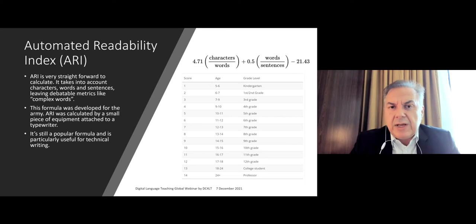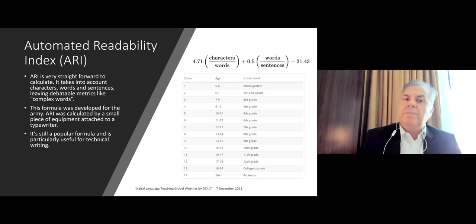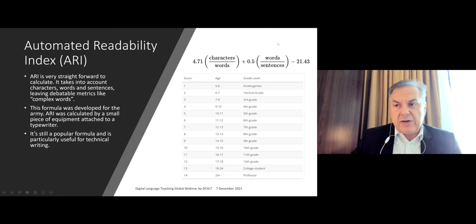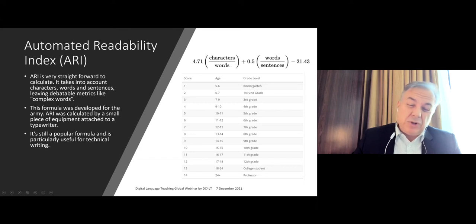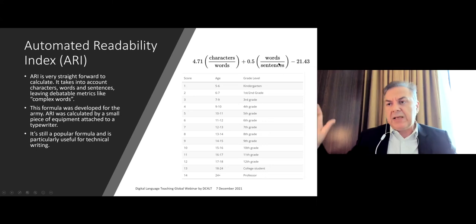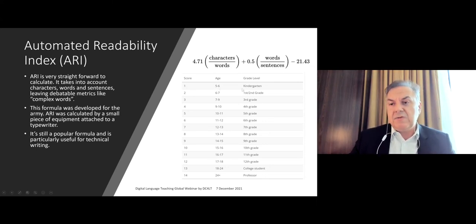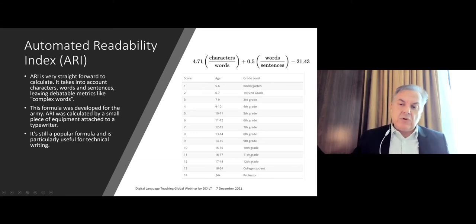Another well-known formula is the Automated Readability Index, used for technical writing. The formula is very straightforward: the first component is word length measured by characters rather than syllables, and the other is sentence length — how big sentences are used. The score correlates with specific grade levels in the education system; the bigger the score, the more advanced the text.